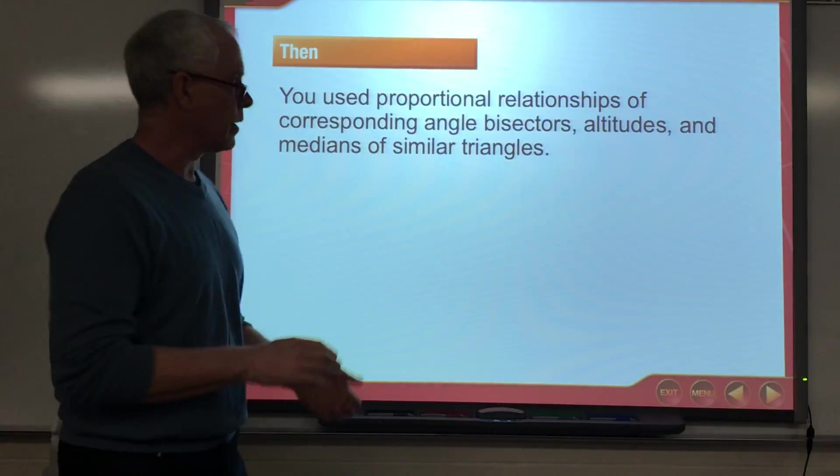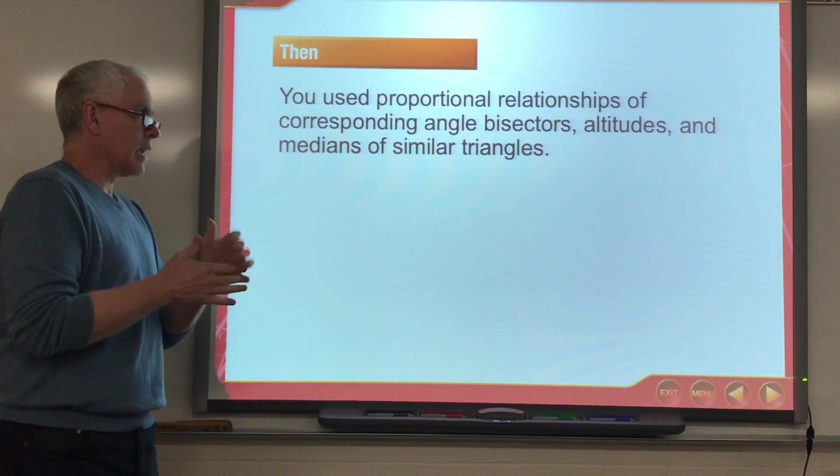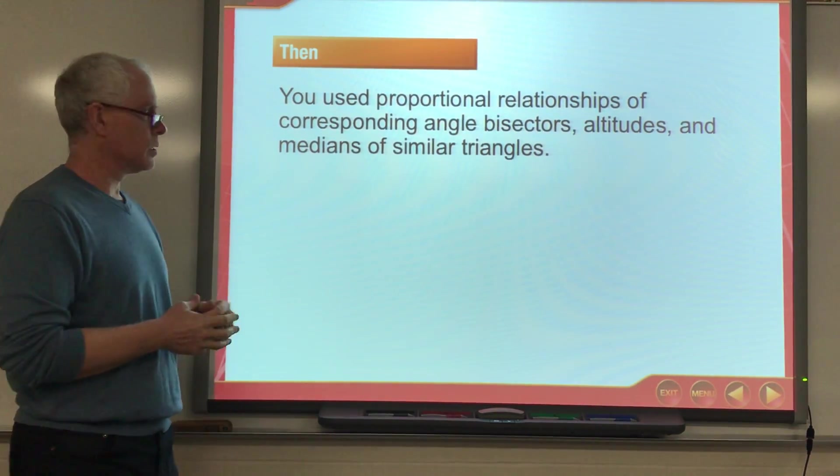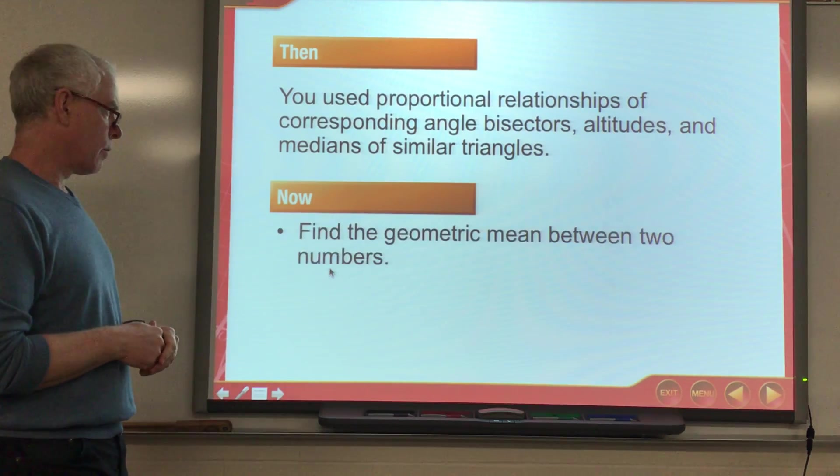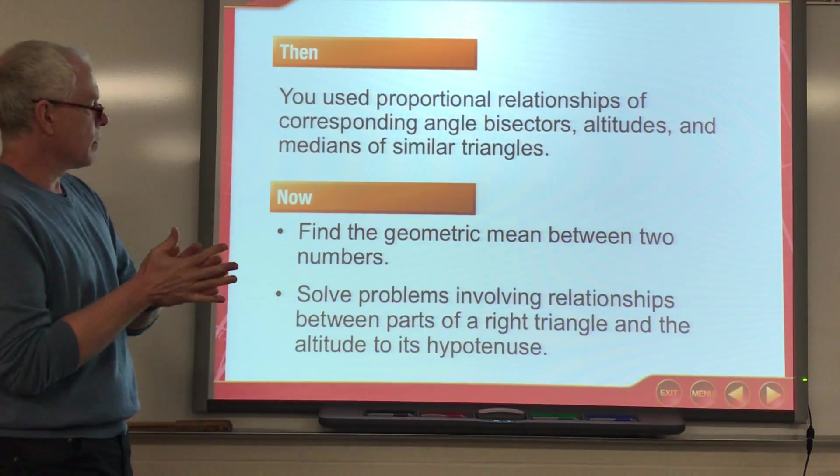Okay guys, let's take a look at chapter 8 here. So we used proportional relationships of corresponding angle bisectors, altitudes, and medians of similar triangles. We set up proportions and did that last chapter. Now we're going to look at a geometric mean between two numbers.